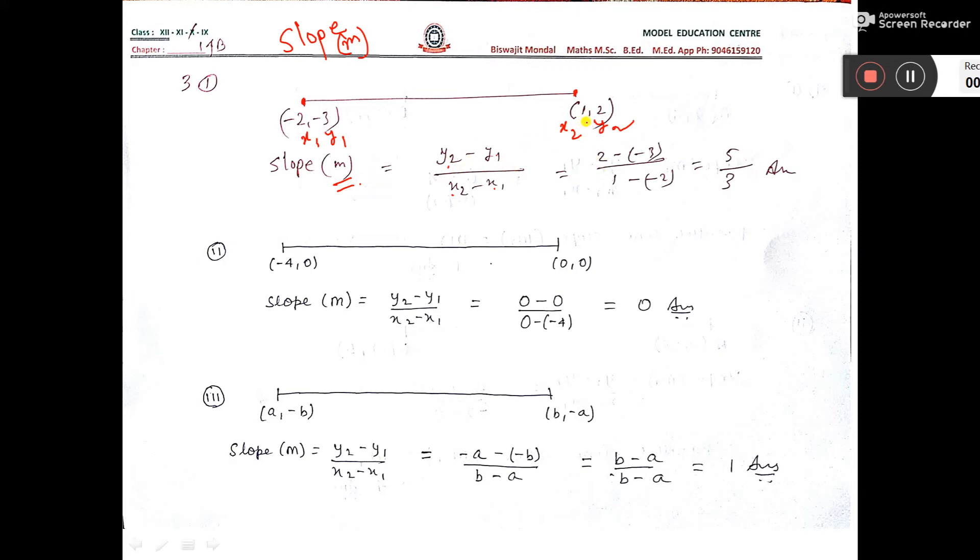Then here, y2 that is 2 minus minus 3, that is 5. And x2 that is 1 minus minus 2, that is 3. This is the answer.